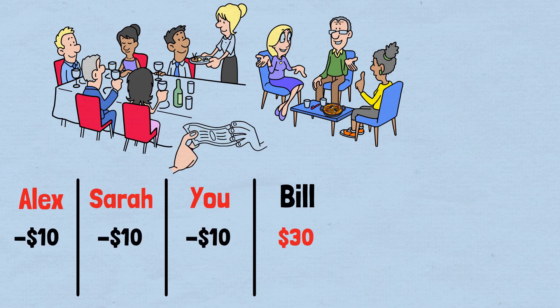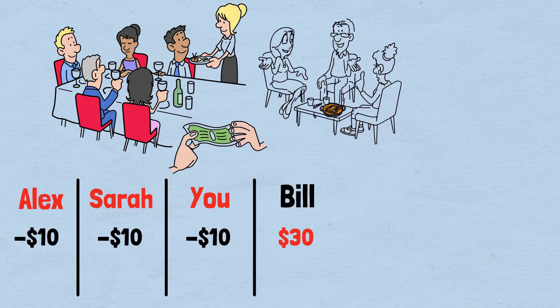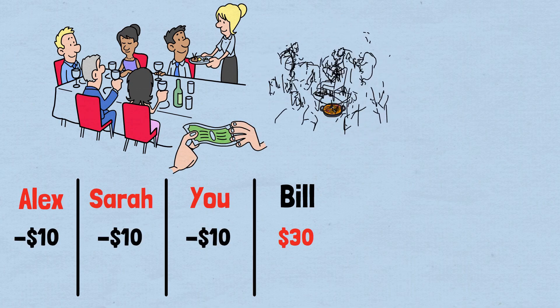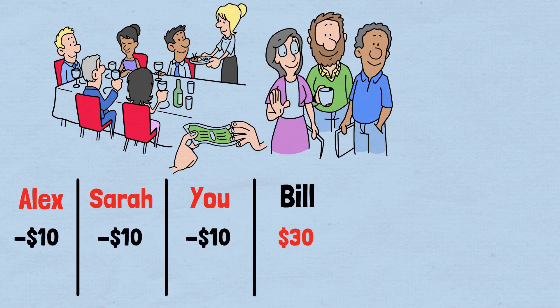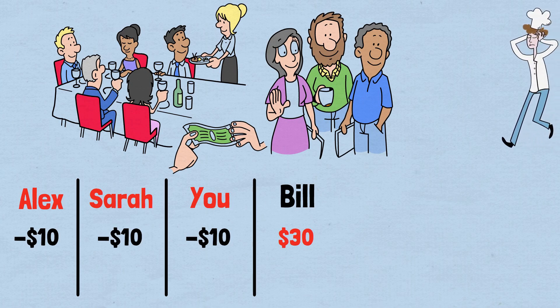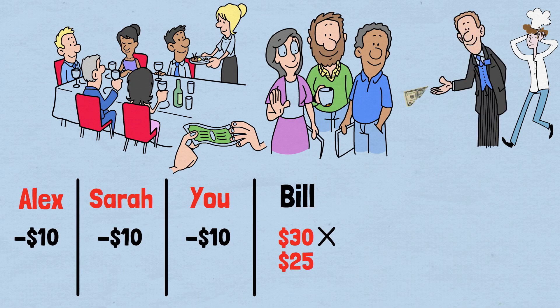You hand over your money, pay the server, and prepare to leave. But as you're getting ready to go, the server rushes over with an apologetic expression. There's been a mistake — the bill should have been only $25, not $30. He quickly hands a $5 refund to the busboy, asking him to return it to your table.